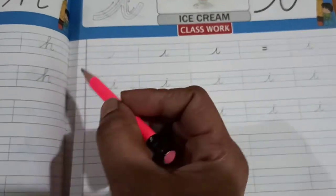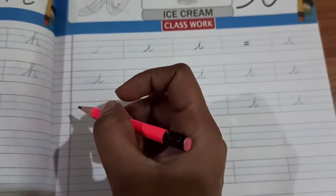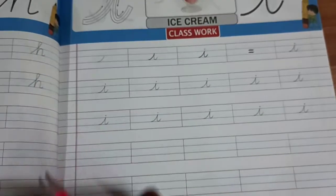I is very easy children. Four line format.